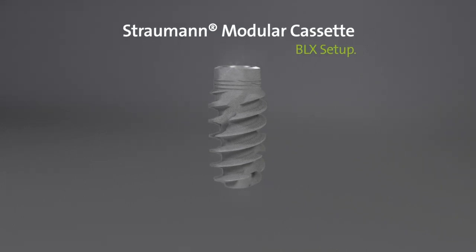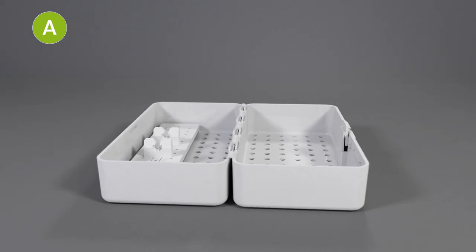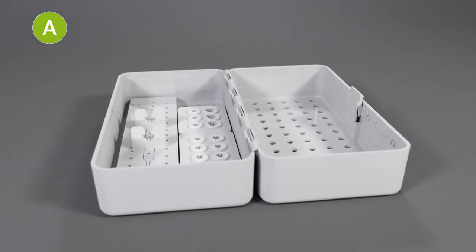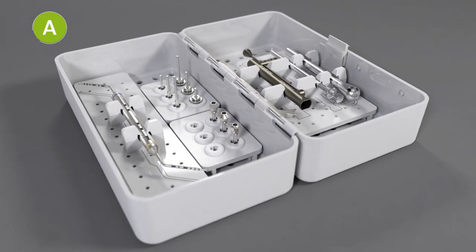Let's set up the cassette for BLX. Click the trays into the A module and put the instruments into the silicon holders. The A module is set up.